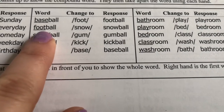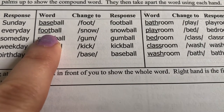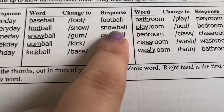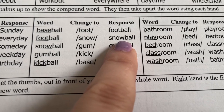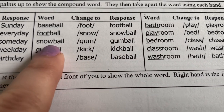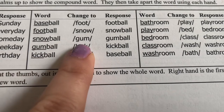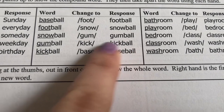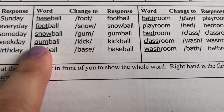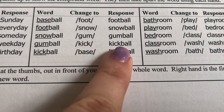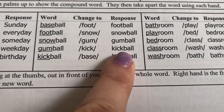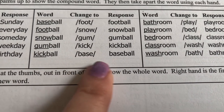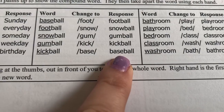Let's do another one. Football — the student would say football. Change foot to snow, and the word is snowball. Snowball. Change snow to gum, and the word is gumball. Gumball. Change gum to kick, and the word is kickball. Kickball. Change kick to base, and the word is baseball.